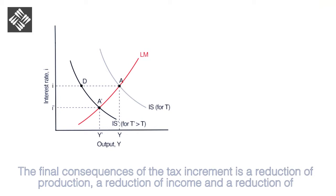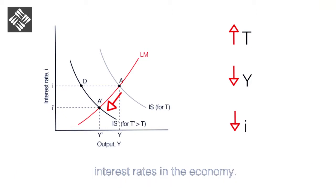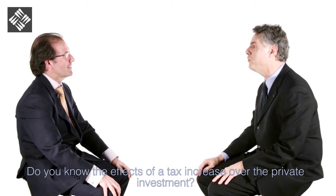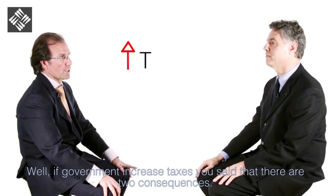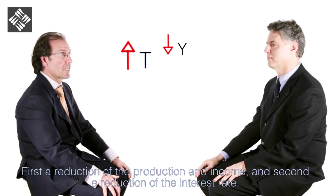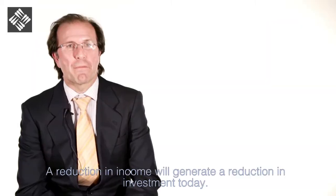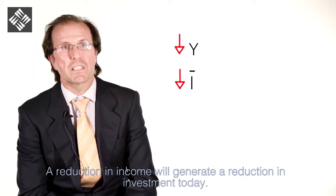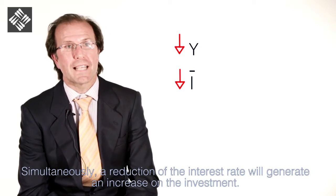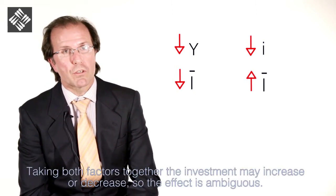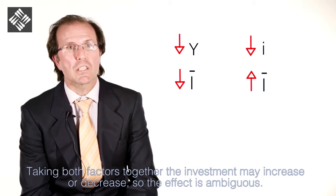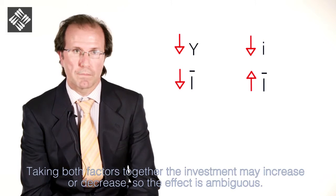The final consequence of the tax increase is a reduction of production, a reduction of income, and a reduction of interest rates in the economy. What are the effects of a tax increase on private investment? Well, if the government increases taxes, there are two consequences: first, a reduction of production and income; and second, a reduction of the interest rate. A reduction in income will generate a reduction in investment, but simultaneously, a reduction of the interest rate will generate an increase in investment. Taking both factors together, the investment may increase or decrease, so the effect is ambiguous.